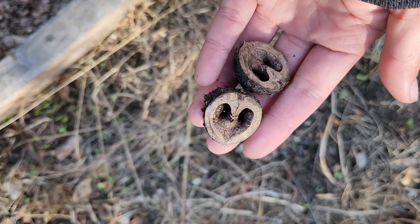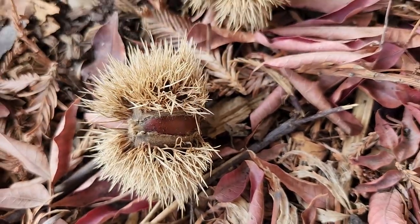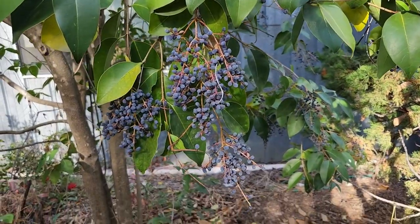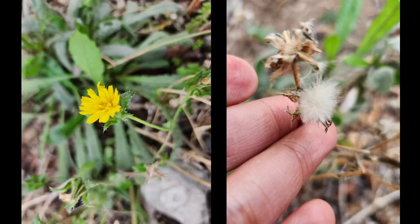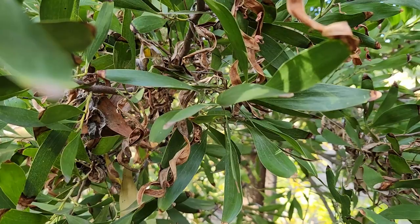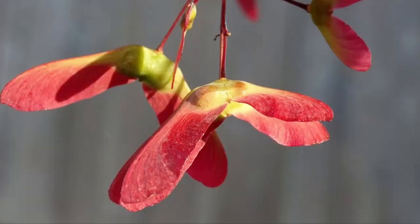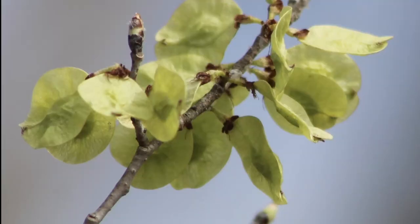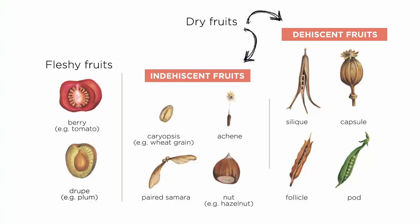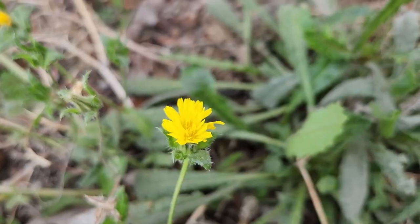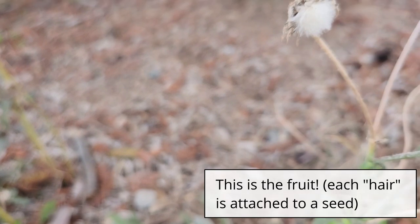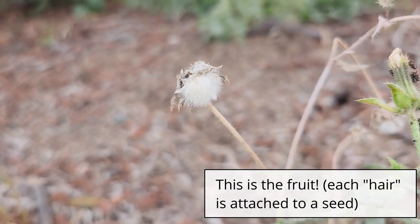The fruit is usually specialized for how it's meant to be dispersed. If you're trying to attract a bird, you might have really bright fruits. If you're trying to be dispersed by wind, maybe you'll have propeller-like appendages like in maples, ash, or tree of heaven. There's a huge variety of fruit and each type has a different name. A lot of these people don't traditionally think of as fruit because they're not fleshy and they weren't bred for us to consume, but these are all botanically fruits.